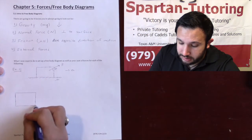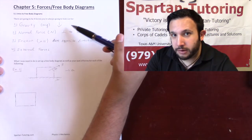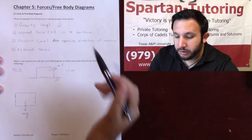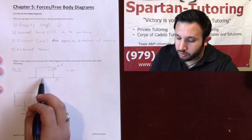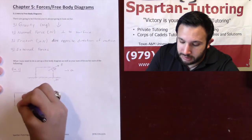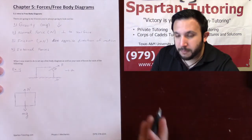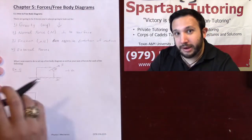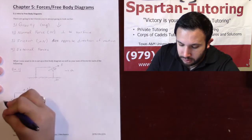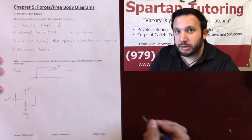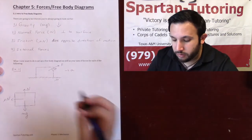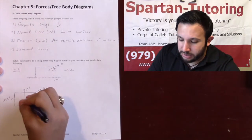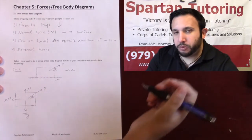Let's go through the checklist. First, gravity is always straight down, so we have mg straight down. The normal force is perpendicular to the surface — the floor is horizontal, so the normal force is straight up. Friction is in the opposite direction of motion: since it's accelerating to the right, mu times N points to the left. Finally, we have the external force F being pulled up at a certain angle.